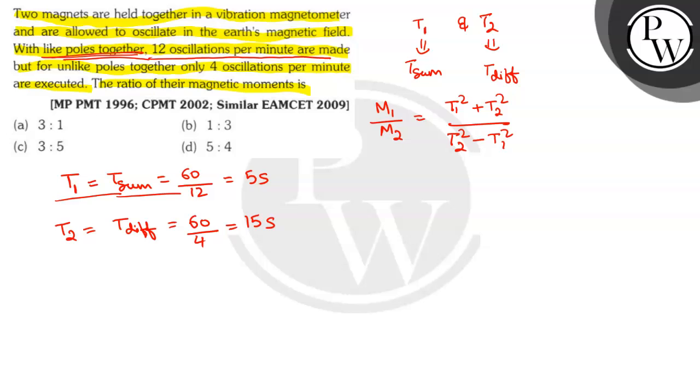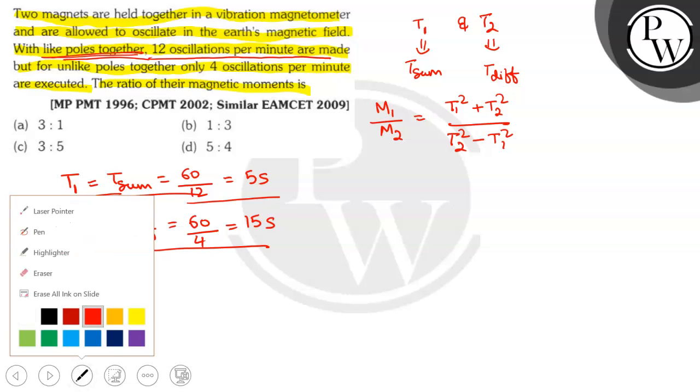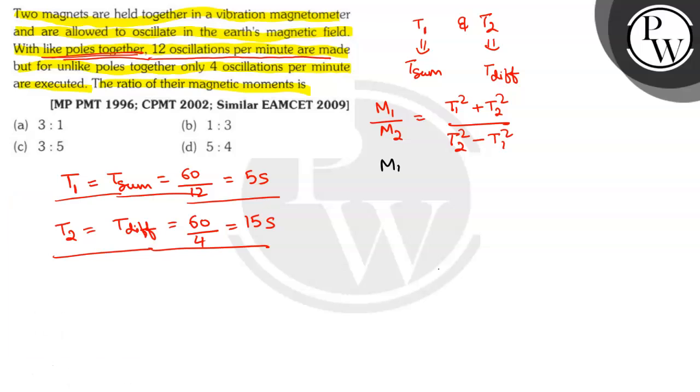So, T1 is T sum, that is 5 seconds. And T2 is T difference, that is 15 seconds. So, M1 by M2 will be equal to T1 squared, that is 25, plus T2 squared, that is 225, by T2 squared, that is 225, minus T1 squared, that is 25, which will be equal to 250 by 200, which will be equal to 5 by 4.